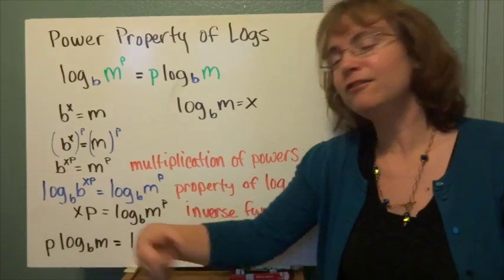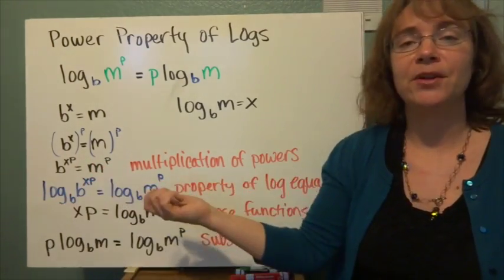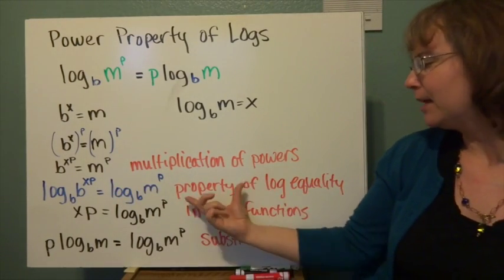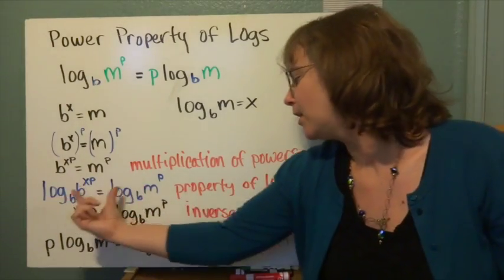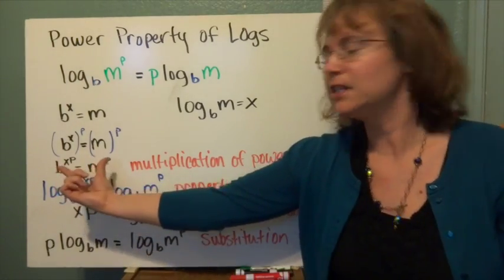Now here, I have the inverse thing going on again, where I have the log of something to an exponent. The reason I could do this was the property of log equality. So this must equal this in order for this to be true.